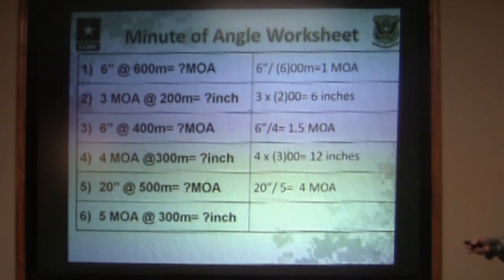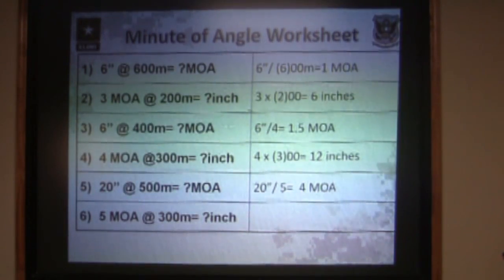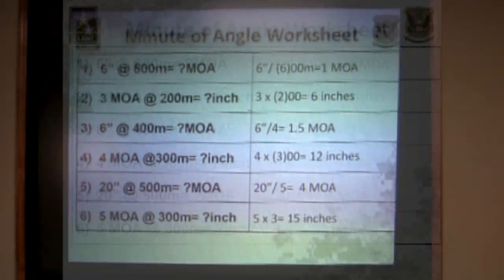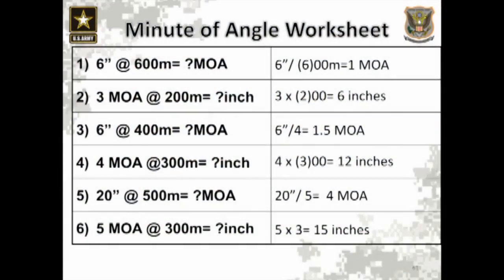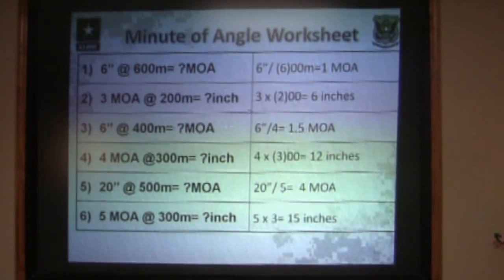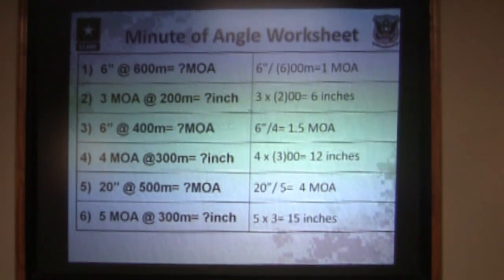Last one: five minutes of angle at 300 meters equals how many inches on target? Take your five minutes of angle, multiply it times your three of your distance, and it gives you 15 inches of movement on the target.